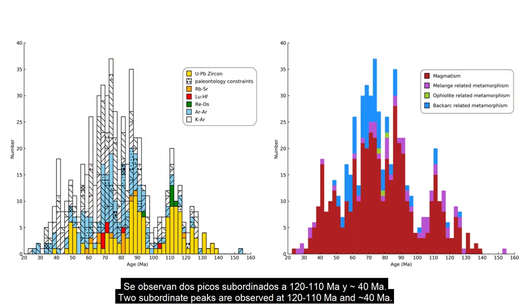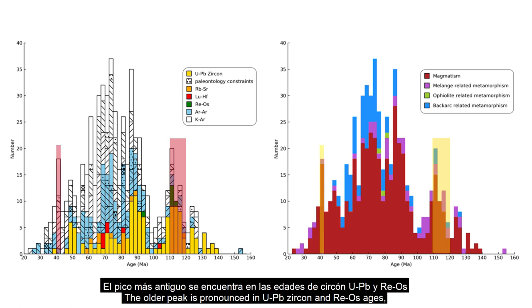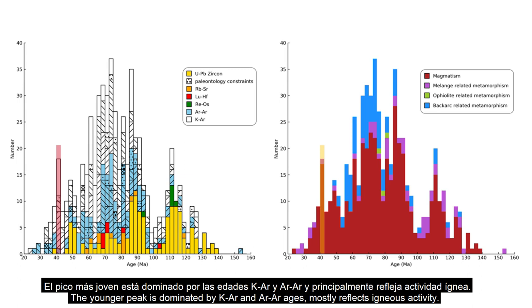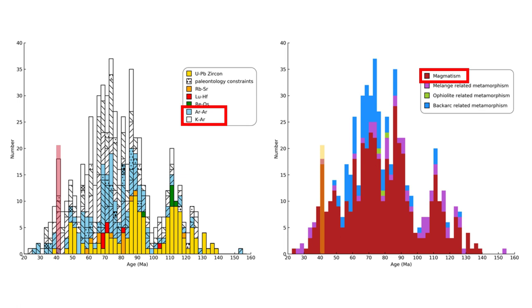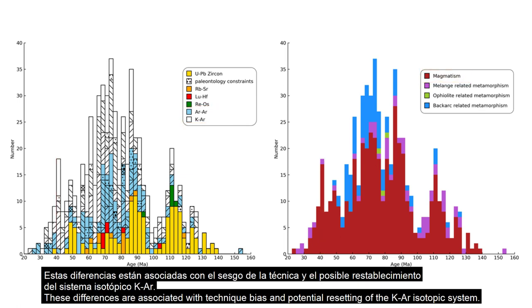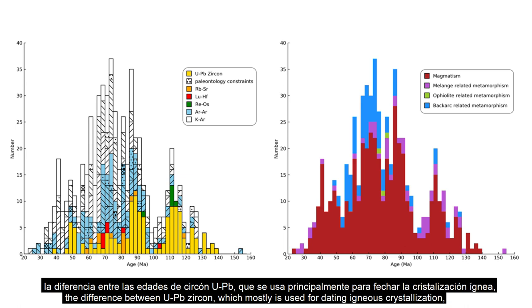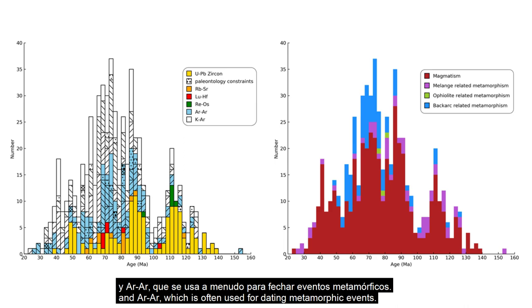Two subordinate peaks are observed at 120 to 110 million years ago and around 40 million years ago. The older peak is pronounced in U-Pb zircon and Rhenium-Osmium ages, and reflects both magmatic and metamorphic activity, including partial melting of metamorphic rocks. The younger peak is dominated by potassium-argon and argon-argon ages and mostly reflects igneous activity. These differences are associated with the technique bias and potential resetting of the potassium-argon isotopic system, as well as a geologic bias between U-Pb zircon, mostly used for dating igneous crystallization, and argon-argon, often used for dating metamorphic events.